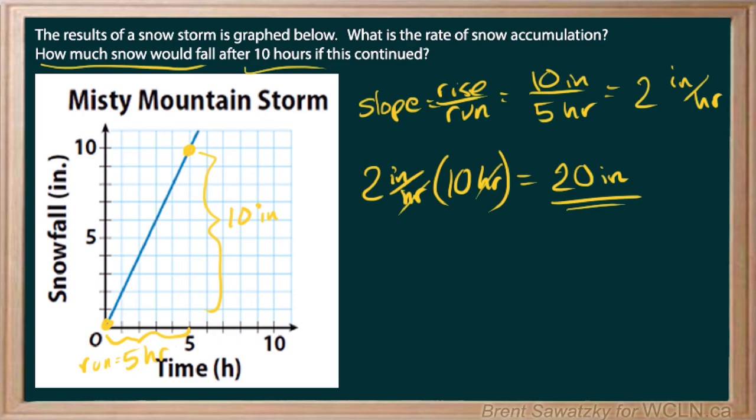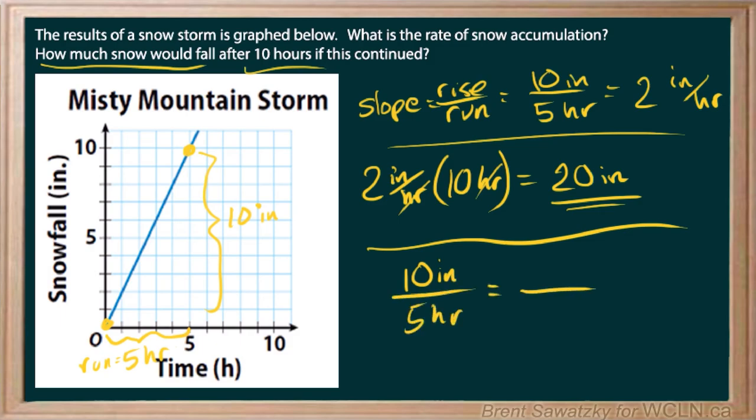And certainly, some people would have taken that first step and said, okay, that's 10 inches over five hours. Let's just make an equivalent ratio there. What would happen if we were looking at 10 hours? We'd have to multiply by two. So to keep it the same rate, we multiply by two. And our answer would be 10 times two is 20 inches.